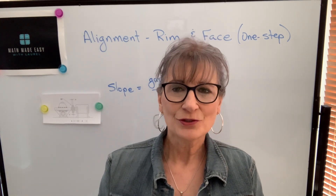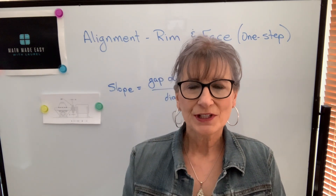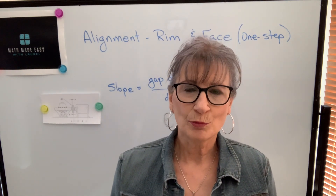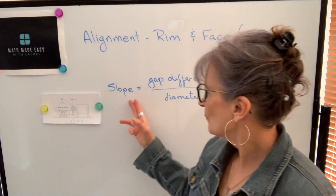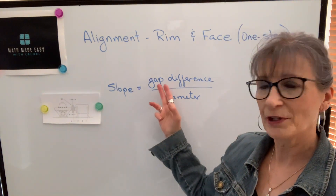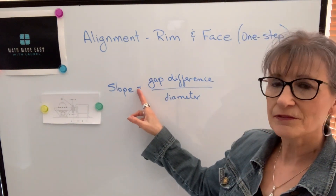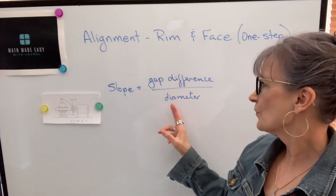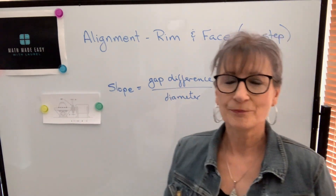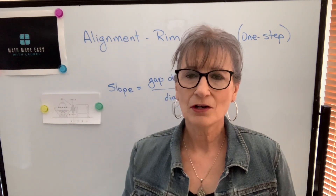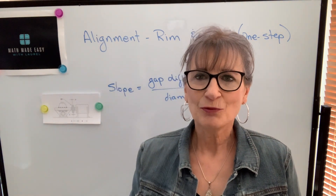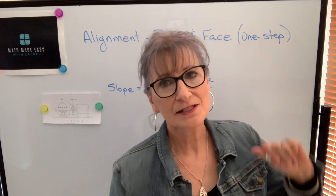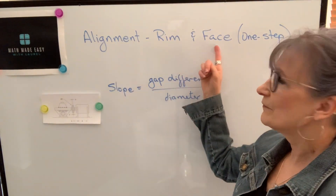In the previous video I introduced alignment and talked about the idea of slope. I showed how to find slope using proportion, but now I'm going to talk about slope as just a formula. Slope is going to be defined as the gap difference between the couplings over the diameter of the couplings. We're going to be using that concept in this video, and before we get started I want to explain what one-step method means — and in particular what rim and face method means.